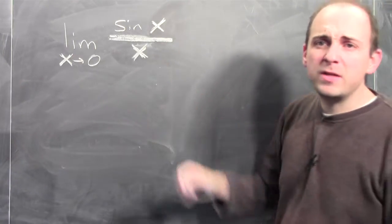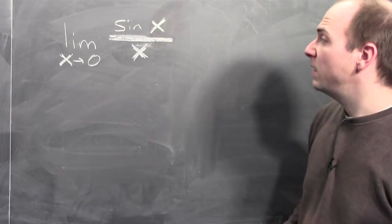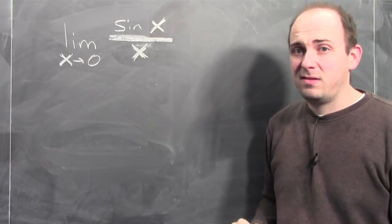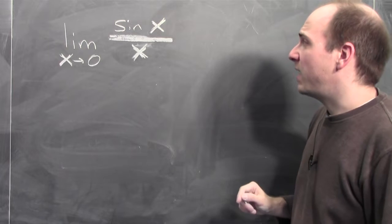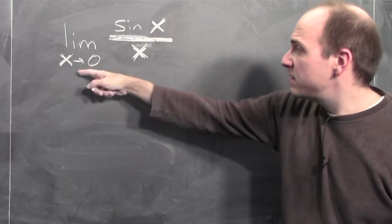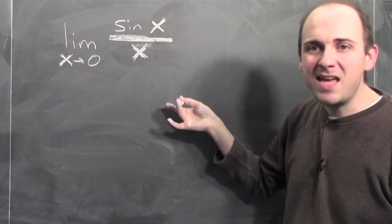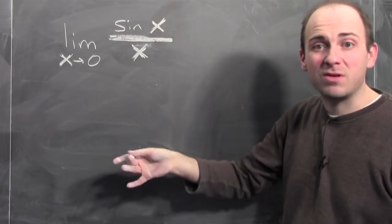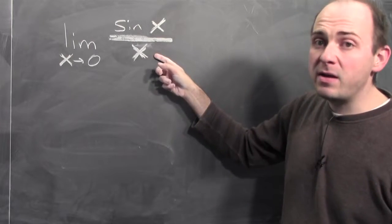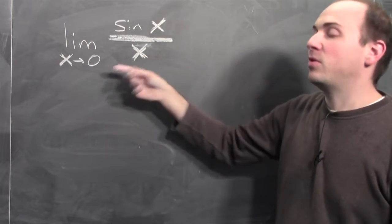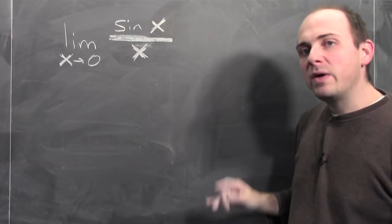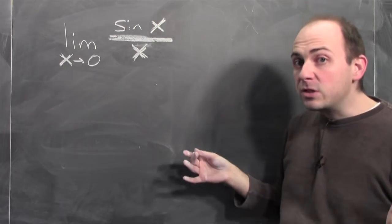Here's a problem that you might be tempted to use L'Hopital on. You want to know the limit as x approaches zero of sine x over x. Let's take a look at the limit of the numerator by itself. The limit of sine x as x approaches zero — sine's continuous — so that limit is just sine of zero, which is zero. The limit of the denominator, the limit of x as x approaches zero, is also zero. So this is a zero over zero indeterminate form, so we try using L'Hopital.